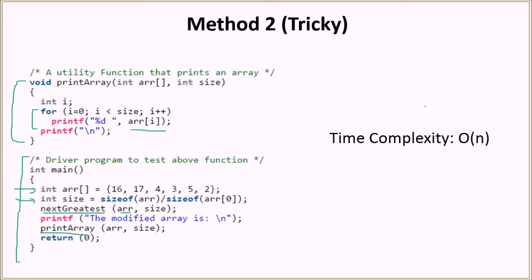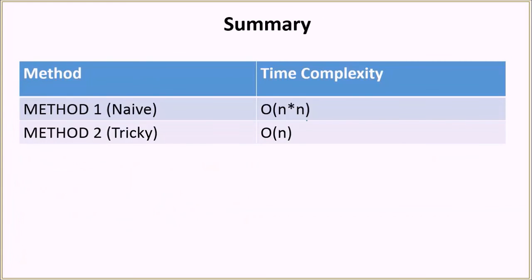The time complexity of this solution is O(n) because we iterate over the array only once using a single for loop. In summary, we discussed two methods: the first was the naive brute-force algorithm with O(n²) time complexity, and the tricky method had O(n) time complexity. We would definitely recommend Method 2 for its better time complexity.